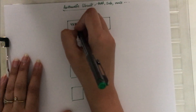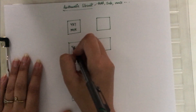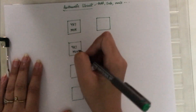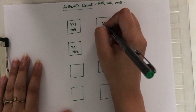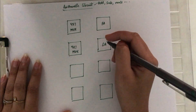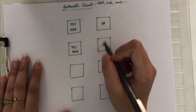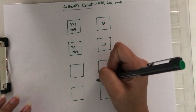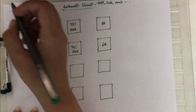The multiplexers need to be of the 4-to-1 type, and similarly four full adders are required. To understand the crux of this circuit, we first need to understand what a multiplexer and a full adder are.